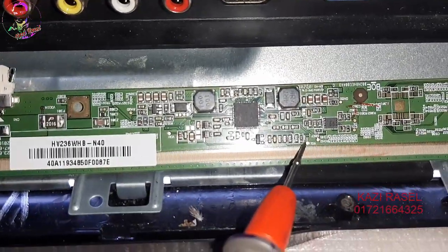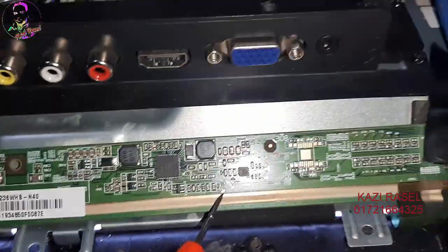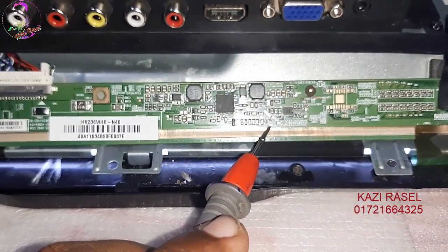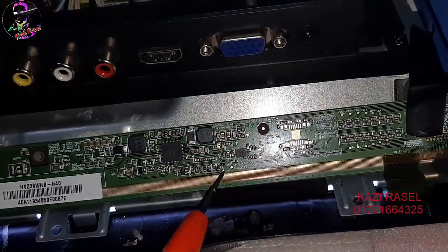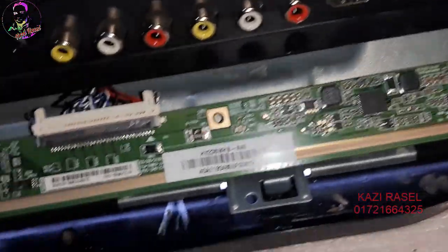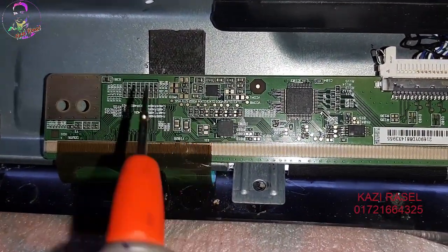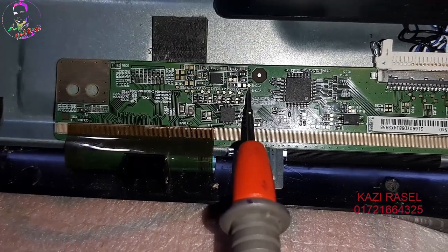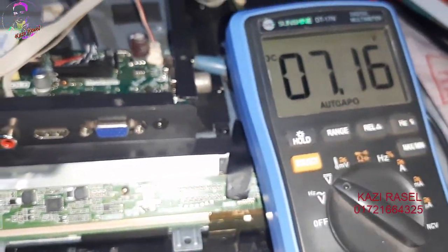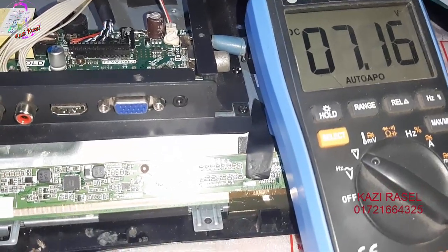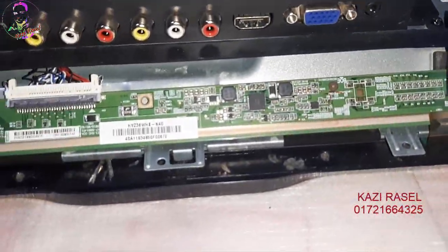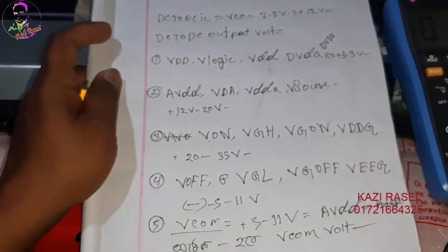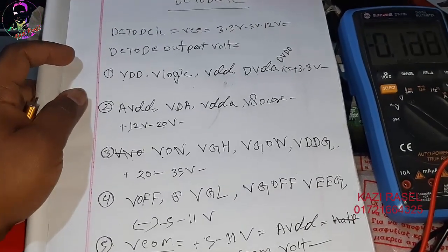This voltage is minus VGL. VGL is minus 7V. Here I have 3 volts and 8 volts, and I will confirm 7 volts. This is DC to DC — a single supply volt — and this is the voltage of the genesis.